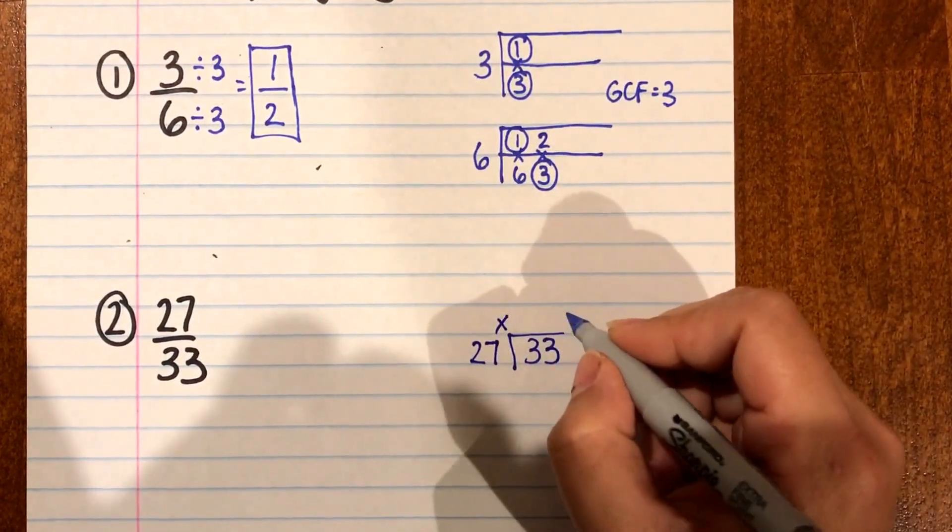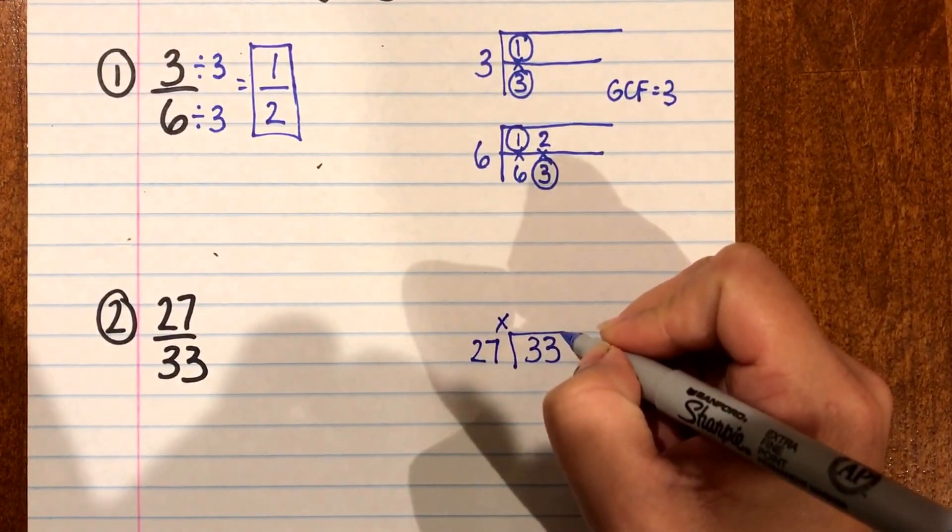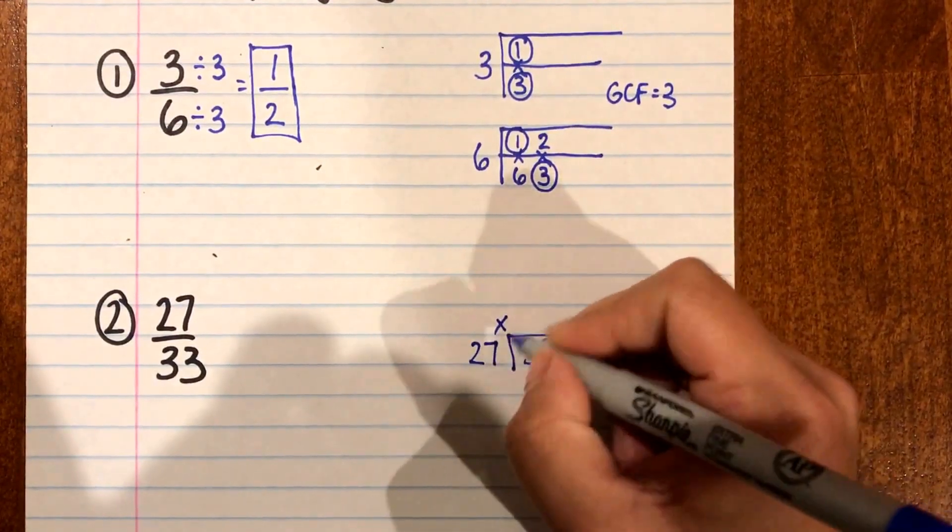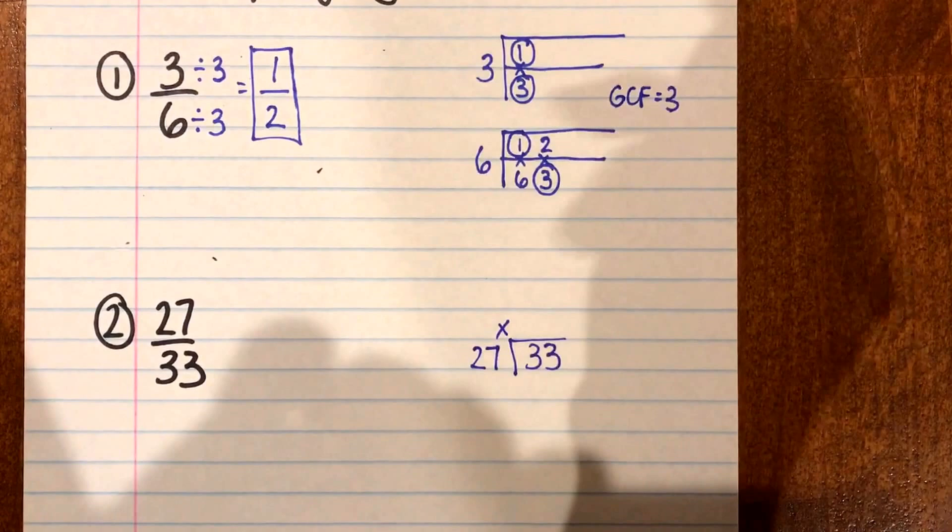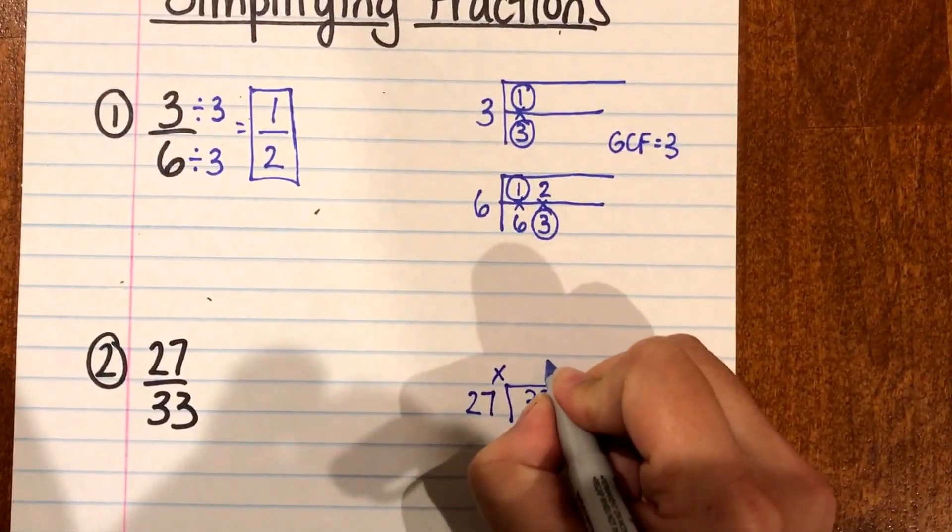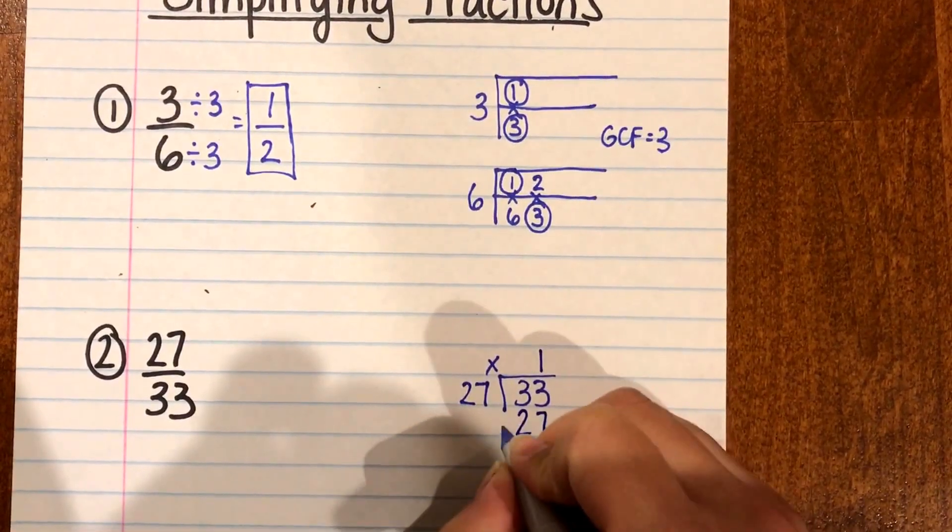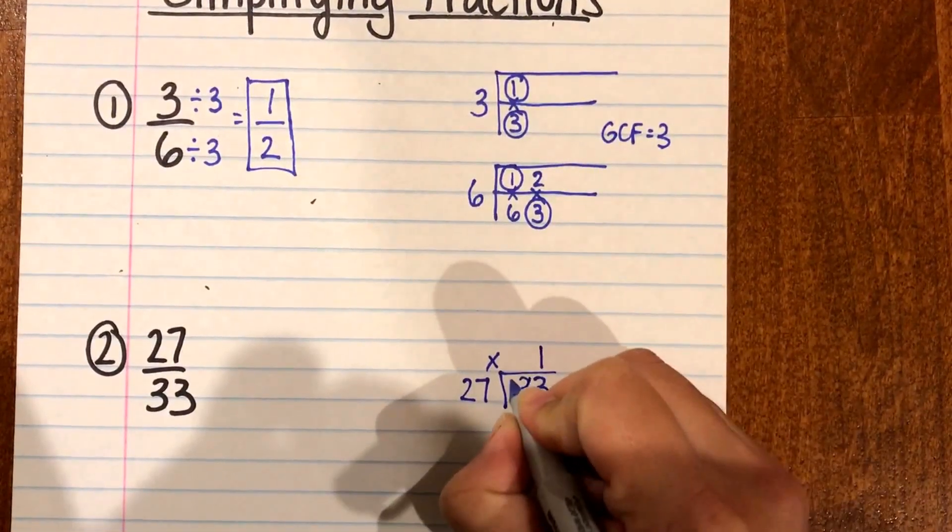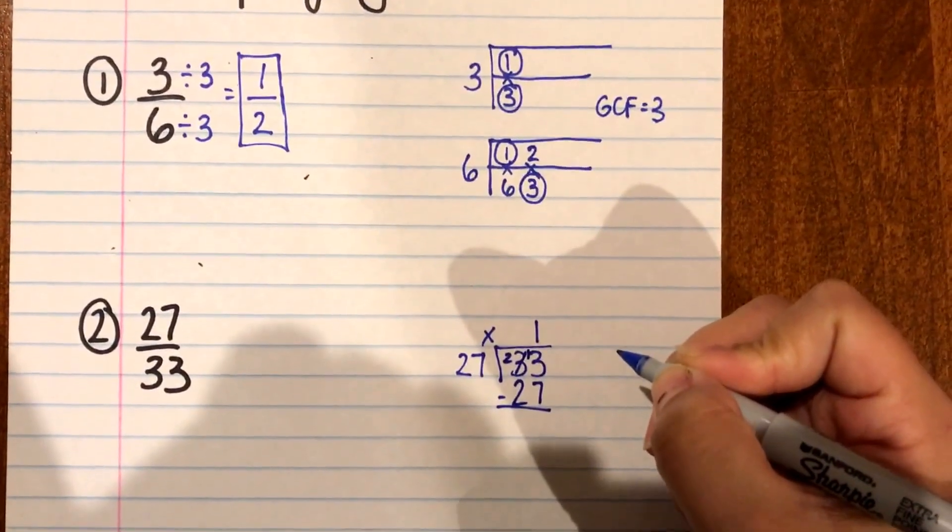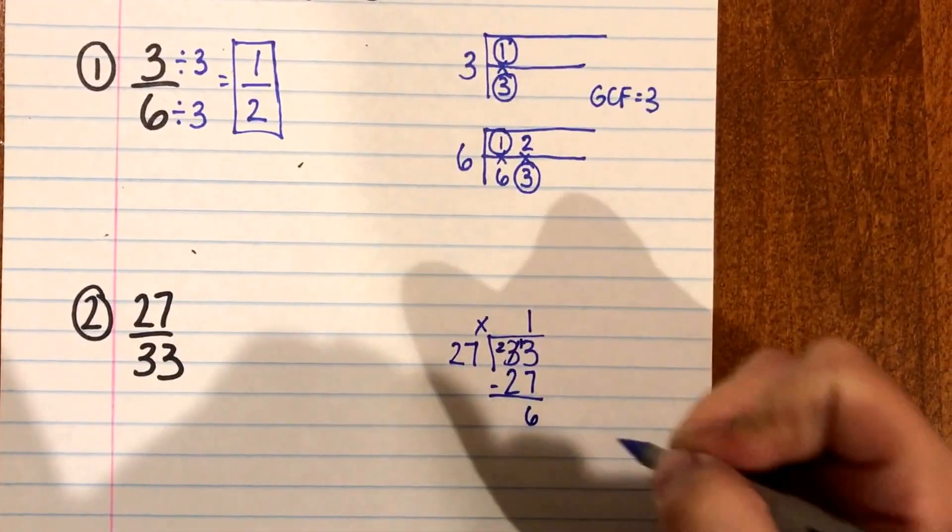So 27 times something is going to give me close to 33. And I like the dividing method better when you have bigger numbers because it gives you a more accurate answer. You don't miss many factors. So 27 times 1 is closest. 1 times 27 is 27. And I subtract 6. 2 minus 2 is 0.